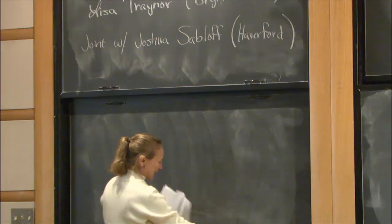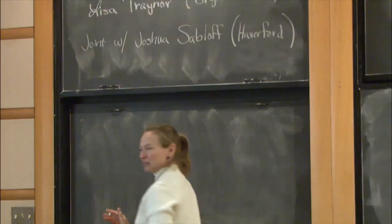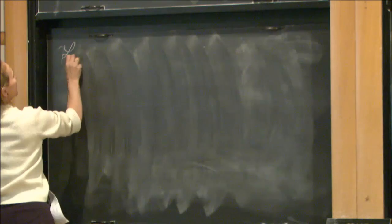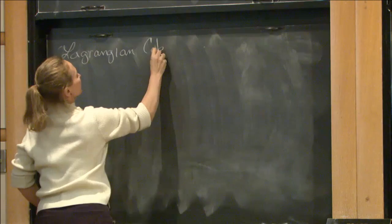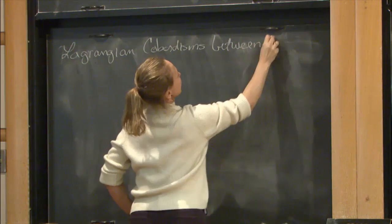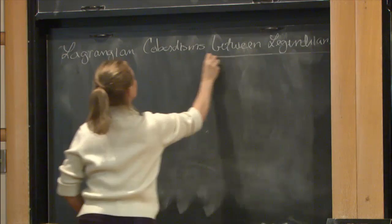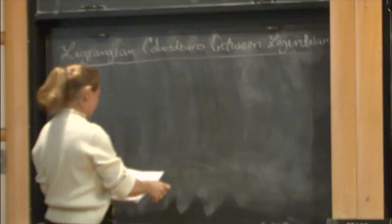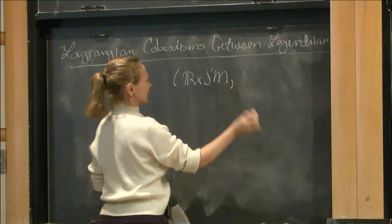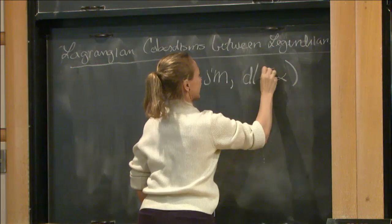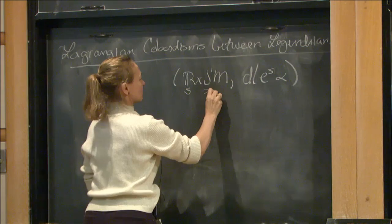Baptiste already talked a little bit about Lagrangian cobordisms, but just to set notation and things. I'll always be working in the symplectization of the one-jet space, so working in ℝ × J¹(M). The symplectic form I'm looking at here is dE ∧ dS ∧ α. My real coordinate is always S, and then we have x, y, z.